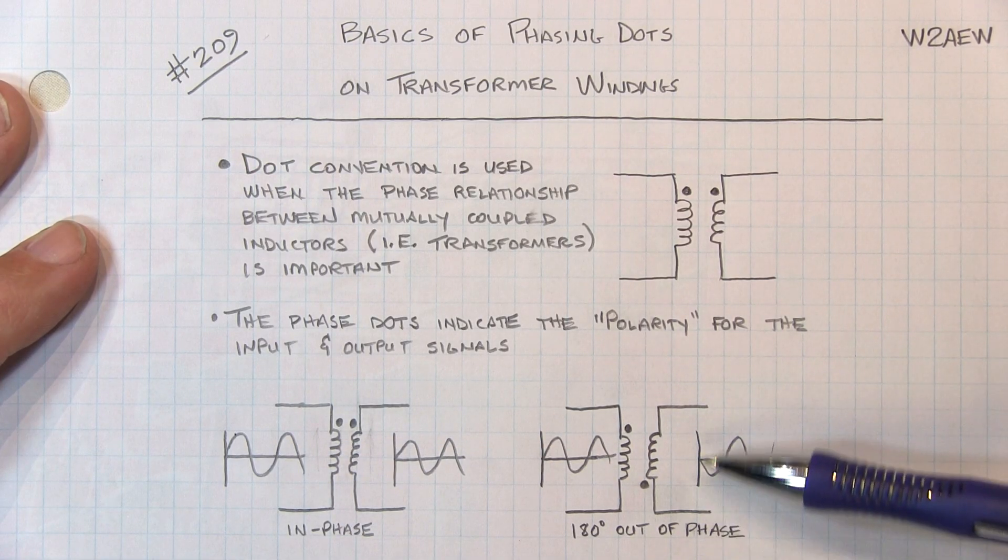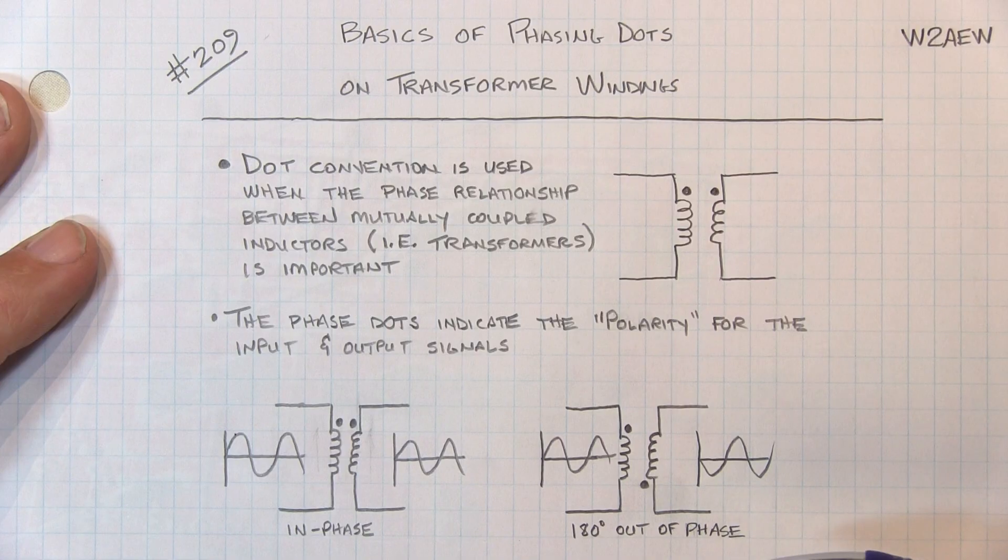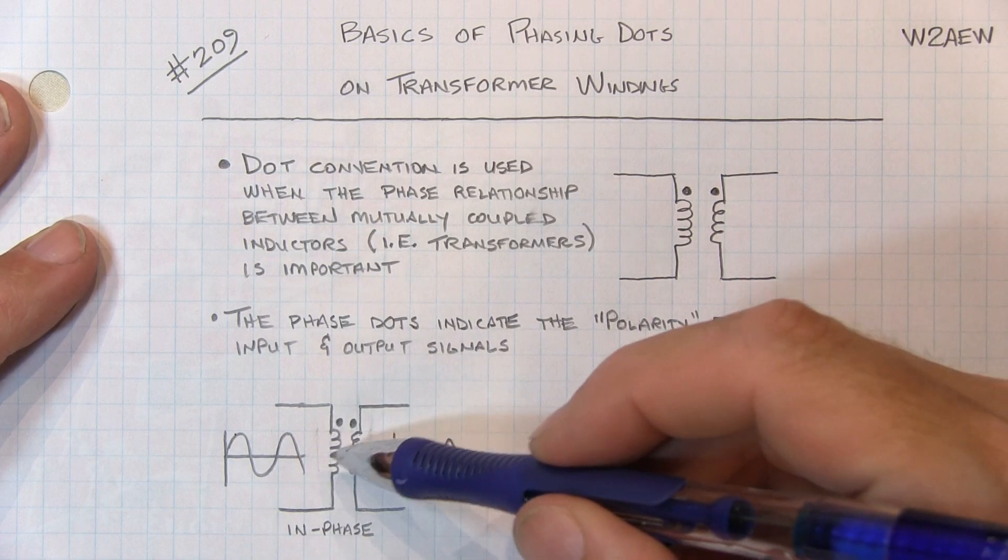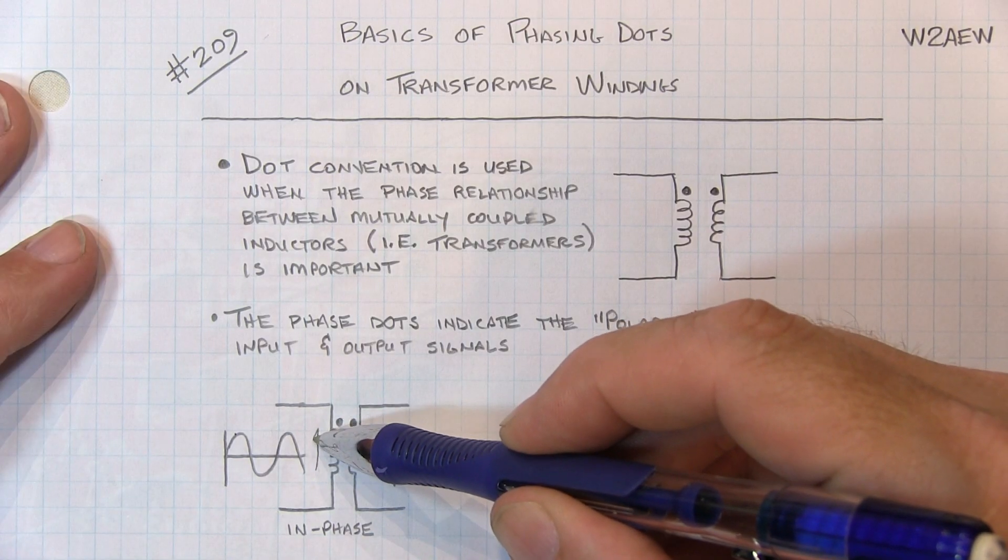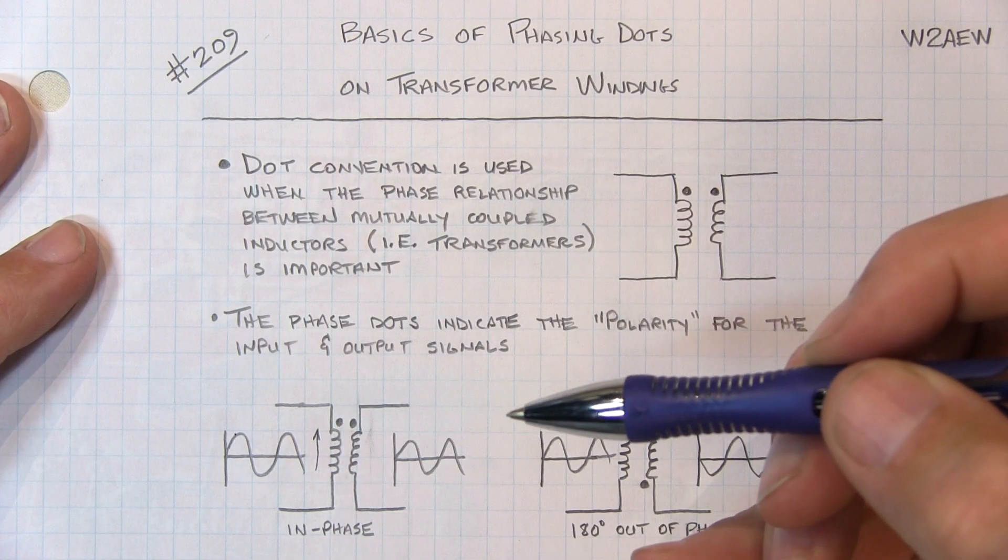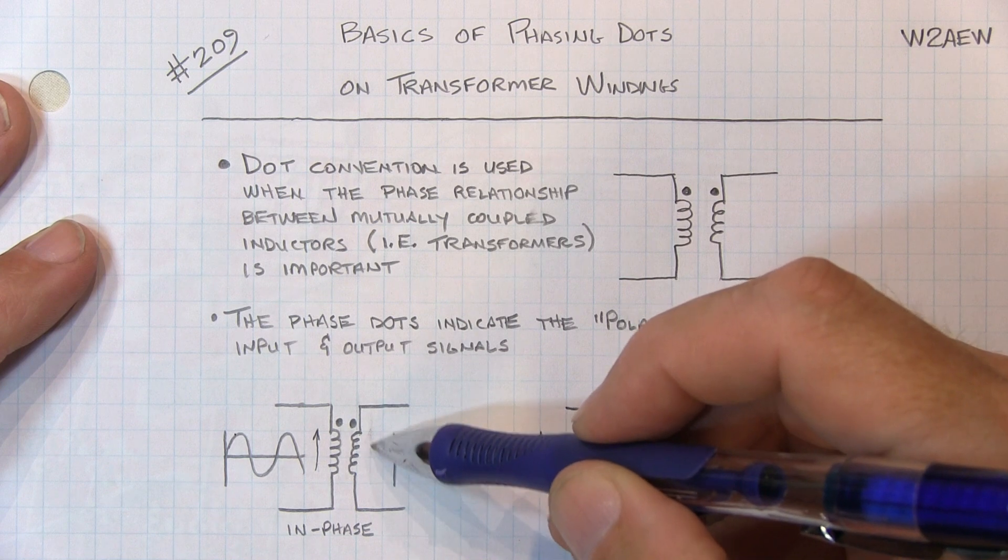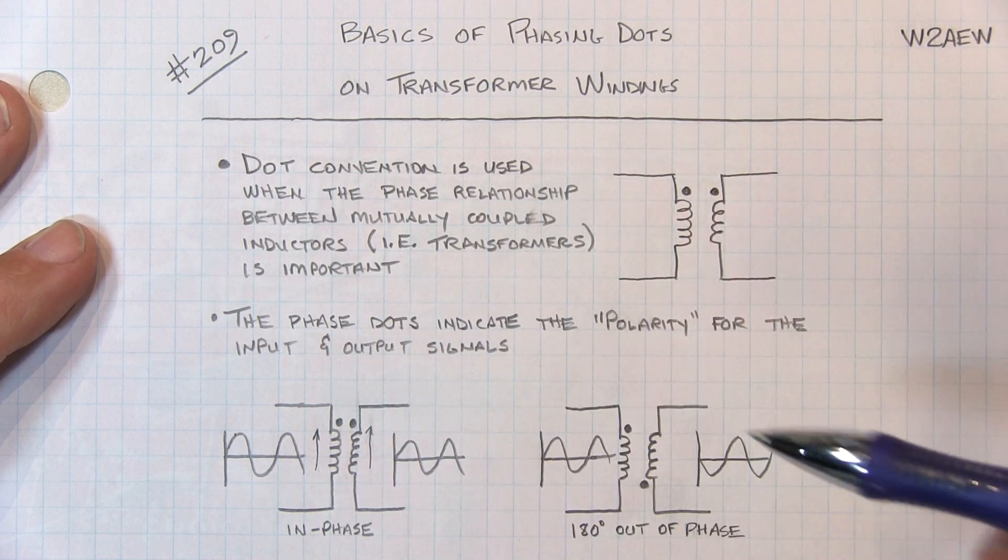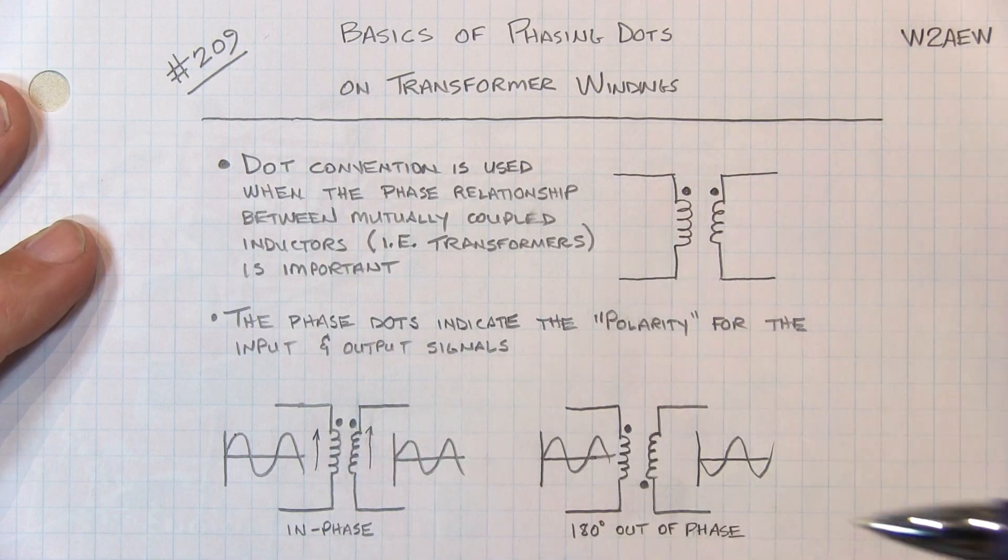If we reverse the connections on the secondary of this transformer, the output would obviously be inverted. So another way to think about these dots is that whenever the voltage is going in a certain direction with respect to a dot on one side, the voltage will go in the same direction on the secondaries when you look at where the dots are.